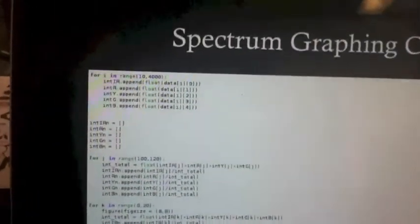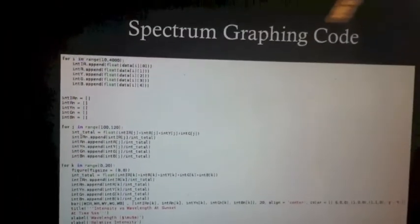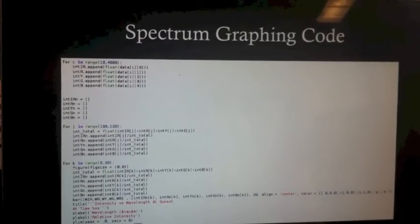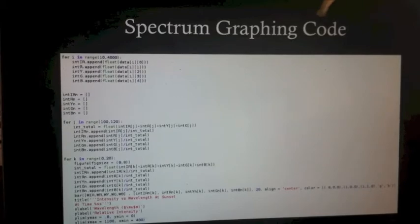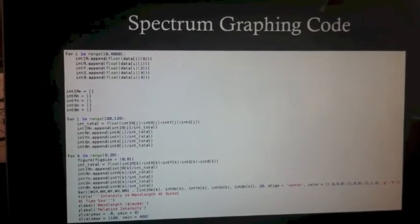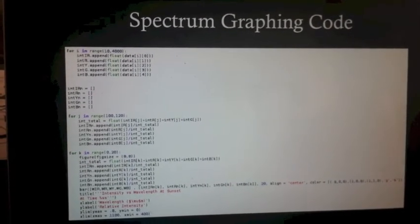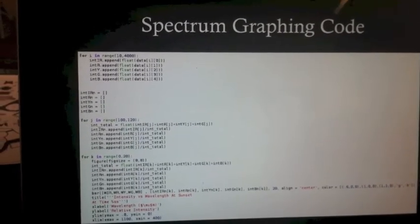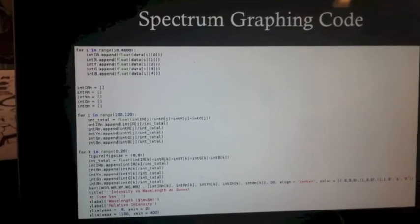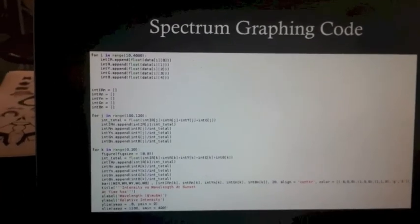This is what we use to make the spectrum graphs that we saw previously and will see in the future. The main part of this is that because we don't know the exact flux over any LED, we need to make the data relative, so we made all the intensities relative.